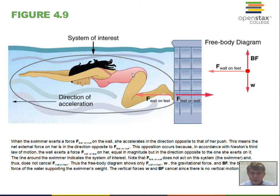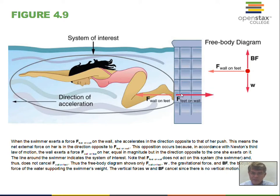Newton's third law: we have a swimmer. The swimmer pushes on the wall; the wall pushes on the swimmer. This is a Newton's third law pair. Suppose this is 100 newtons of push — 100 newtons to the right from the swimmer's feet, and 100 newtons to the left from the wall on the swimmer. Can we legally add them to zero in F equals ma? No — they act on different objects. The force of the feet is on the wall; 100 newtons the other way is the wall pushing on the person.